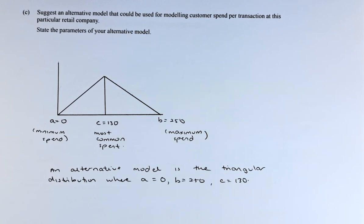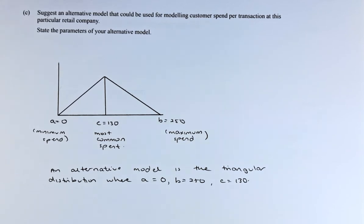Question 3C is a continuation of question 3B, which is a normal distribution. The question reads: Suggest an alternative model other than the normal distribution that could be used for modeling customer spend per transaction at this particular retail company. State the parameters of your alternative method.